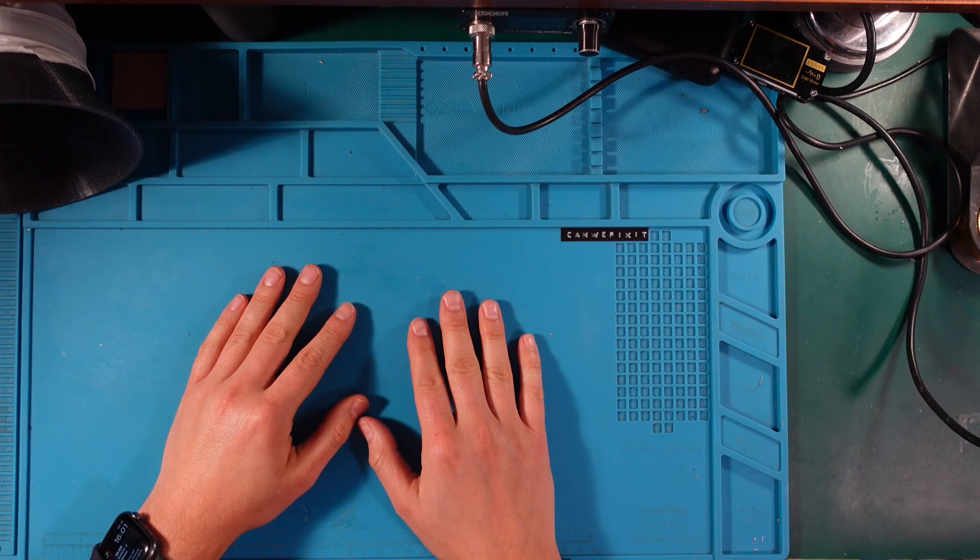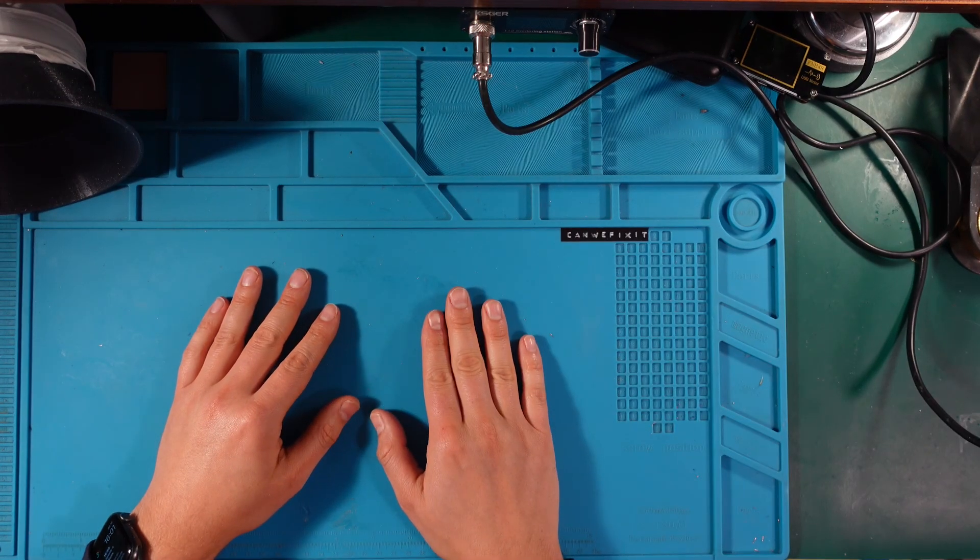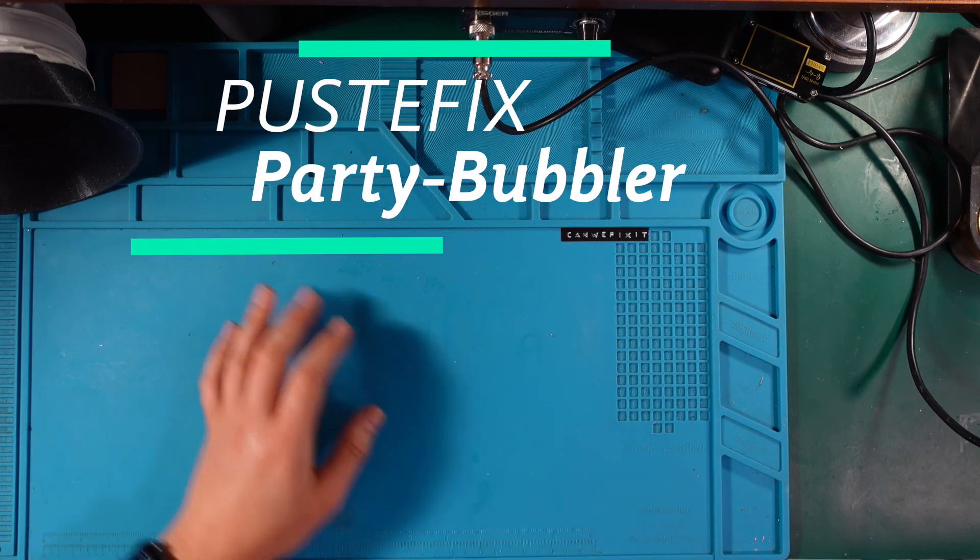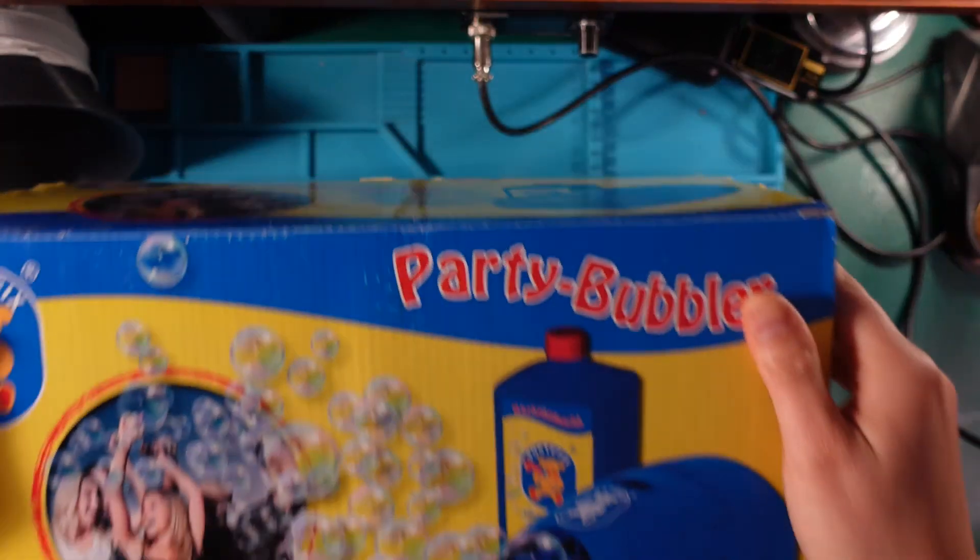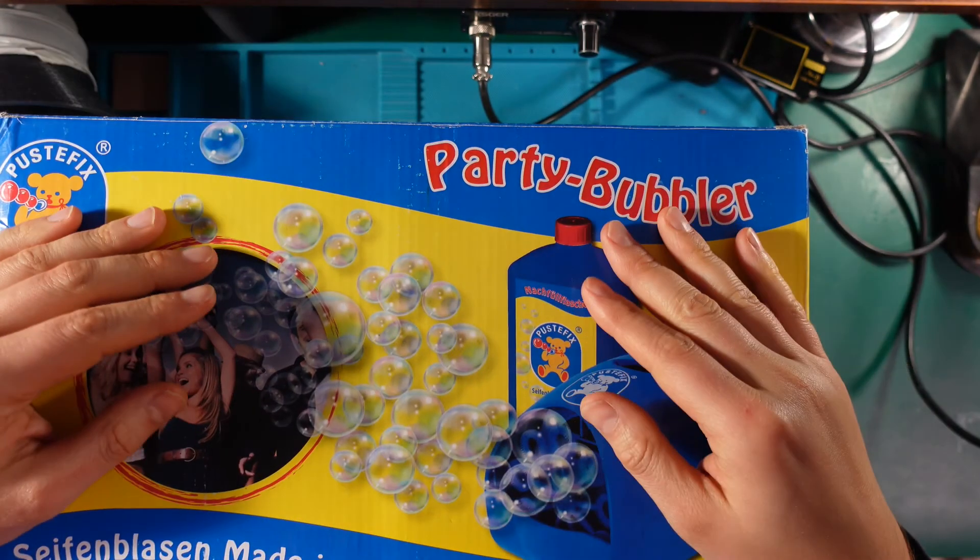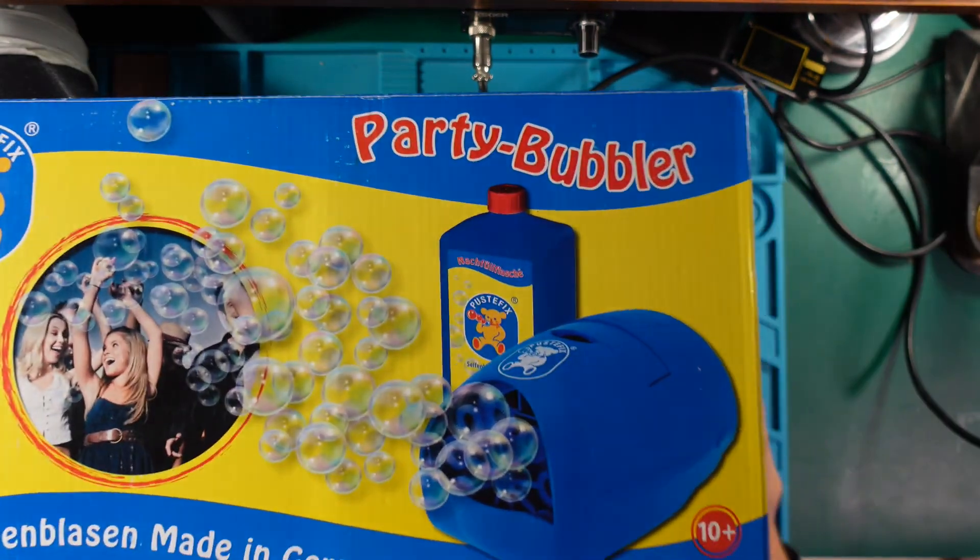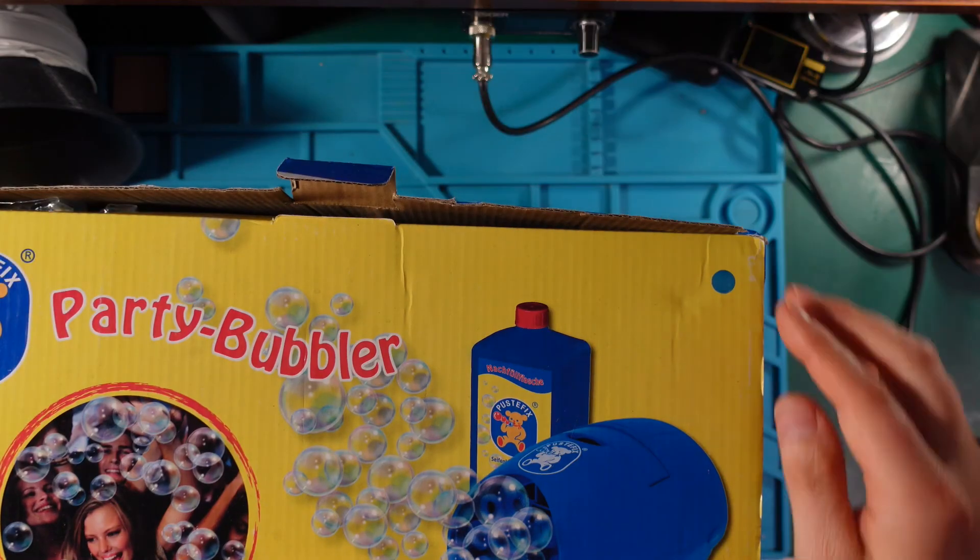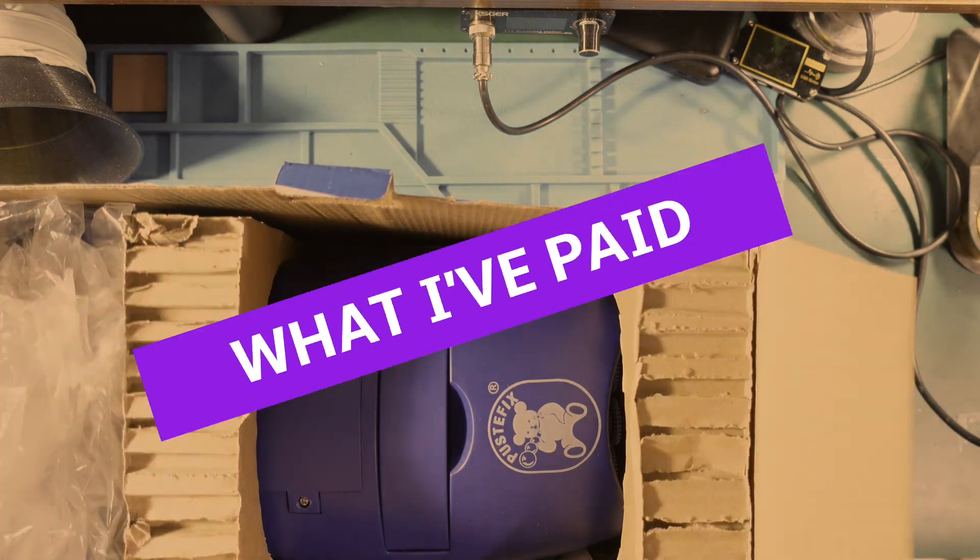Hi guys, Marcus here. Today another eBay item - it's a party bubbler from the German company Pustefix. It's new, or maybe new, but it's not working. There's no power. I didn't pay much for it. I'll put the price on the screen right now.